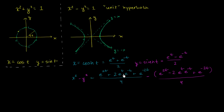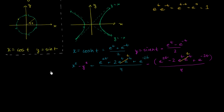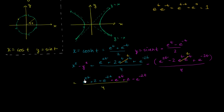Simplifying: e to the t times e to the negative t equals e to the zero, which equals 1. So those middle terms become 2 in each case. Combining everything over 4: the e to the 2t terms cancel, the e to the negative 2t terms cancel, and we're left with 2 plus 2 over 4, which is indeed equal to 1.